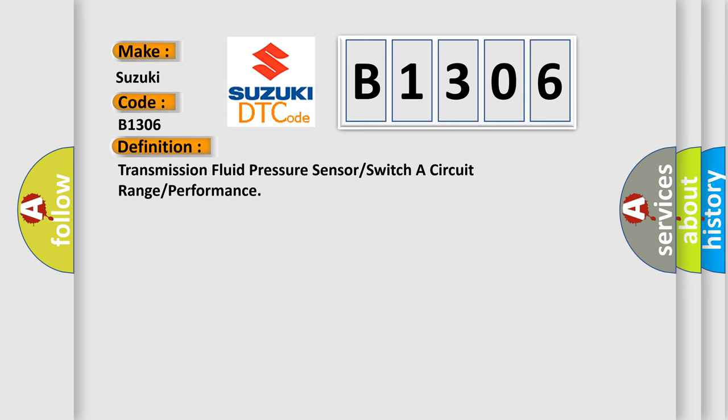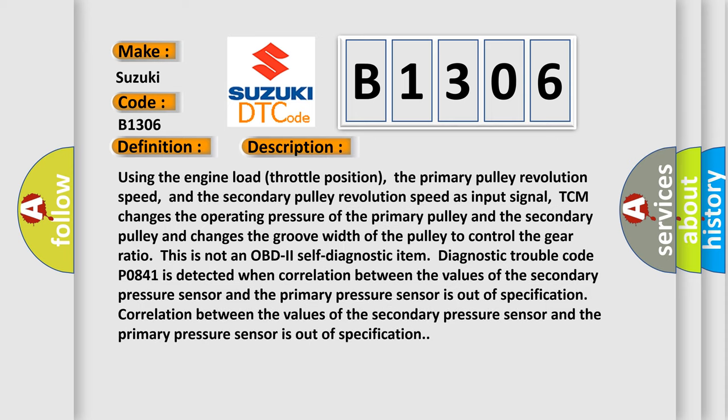Here is a short description of this DTC code. Using the engine load throttle position, the primary pulley revolution speed, and the secondary pulley revolution speed as input signals, the TCM changes the operating pressure of the primary pulley and the secondary pulley, and changes the groove width of the pulley to control the gear ratio. This is not an OBD2 self-diagnostic item. Diagnostic trouble code P0841 is detected when the correlation between the values of the secondary pressure sensor and the primary pressure sensor is out of specification.